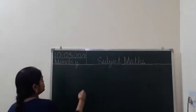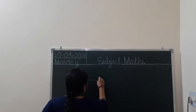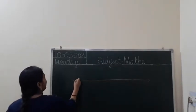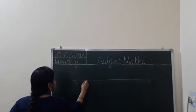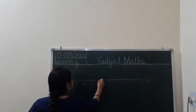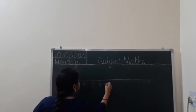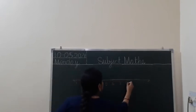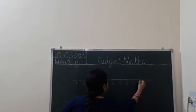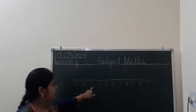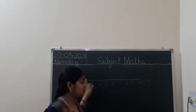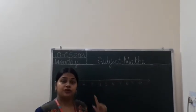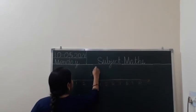Now I am going to draw a line. On this line I am going to write numbers: 1, 2, 3, 4, 5, 6, 7, 8, 9, 10. This is a number line. Today we will do 'what comes after' through this number line.